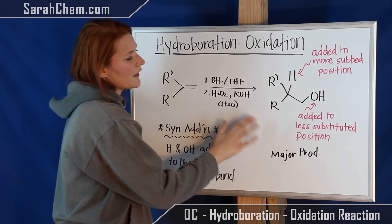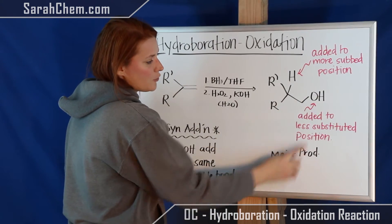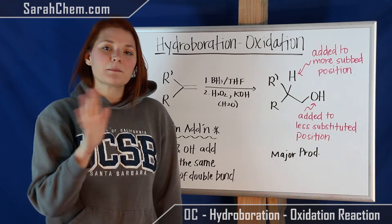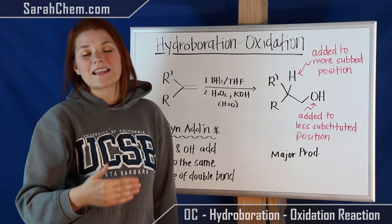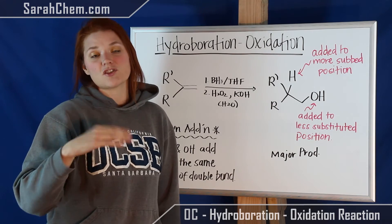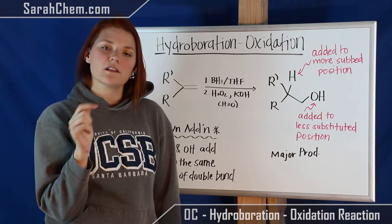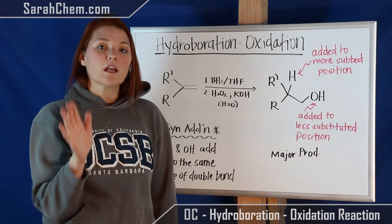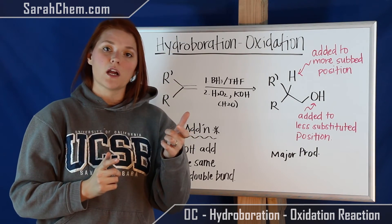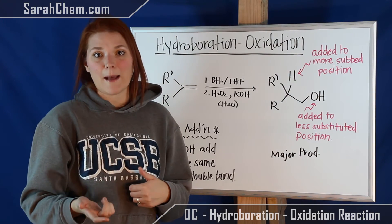So now if we take a look at this product, there's something really interesting about it: the OH group for our major product is adding to the less substituted carbon position. This can be a little striking because oftentimes when we're talking about making an alcohol from an alkene, we're looking at an acid-catalyzed addition of water, where the OH group always adds on to the more substituted position. So this one is unique. If you have a situation where you need to make an alcohol on a less substituted carbon, then hydroboration oxidation may be a very good step to take.